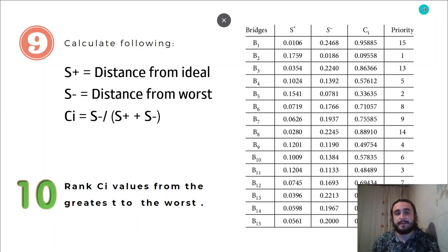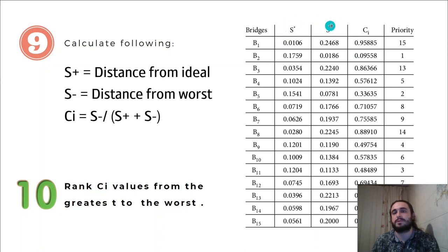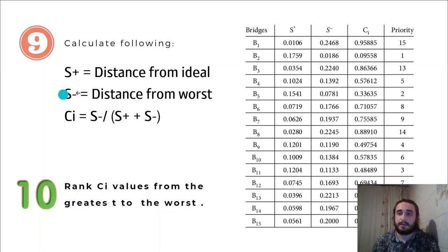As you can see, this column is for the ideal distances and this one is for the worst. This is how you calculate the CI value. The least CI value means that alternative is the one we most want to choose.